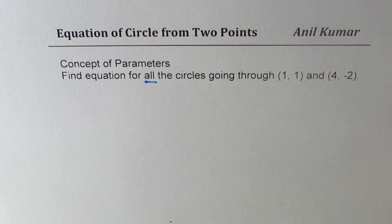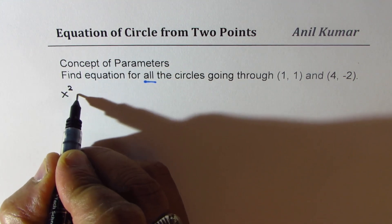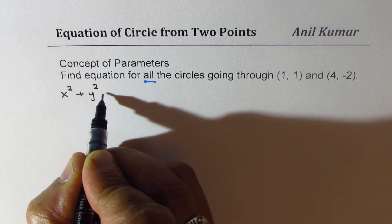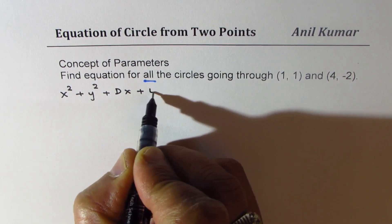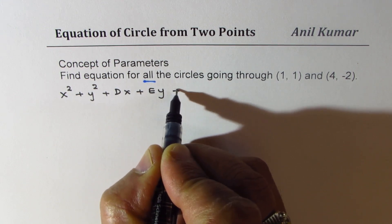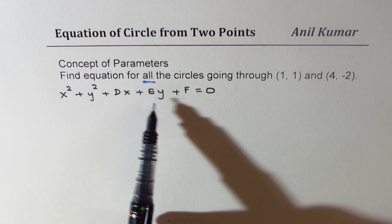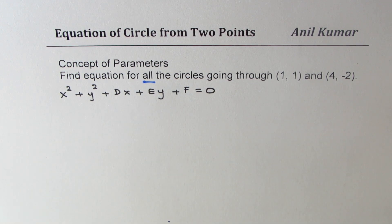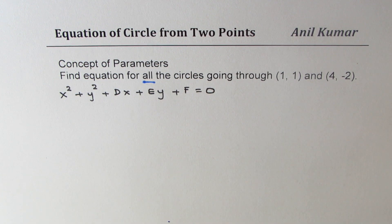Now in general, the equation of a circle can be given as x² + y² + dx + ey + f = 0. As you can see, there are three unknowns: d, e, and f. So we need three equations. From two points we get only two equations.